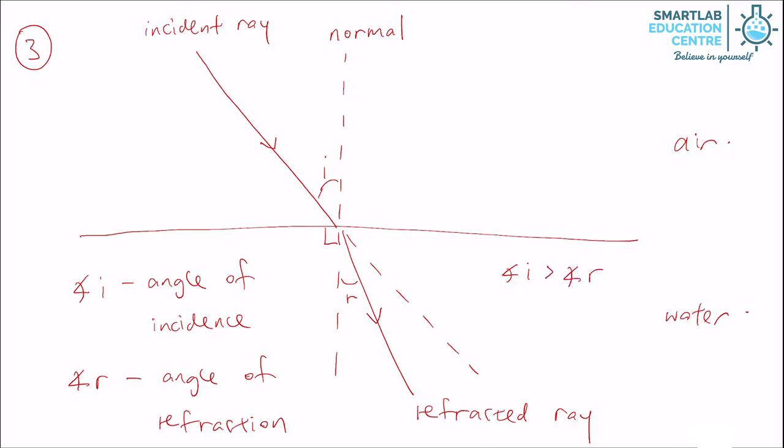Because light bends towards the normal, we say the air is optically less dense, and the water is optically denser.